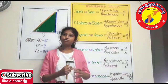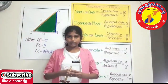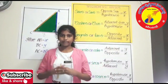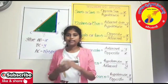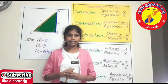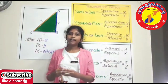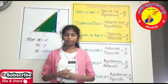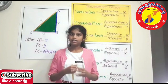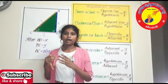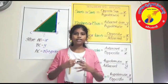Some more basic points of trigonometric ratios: sine theta equals 1 by cosec theta, cosec theta equals 1 by sin theta, cos theta equals 1 by sec theta, and sec theta equals 1 by cos theta. Tan theta equals 1 by cot theta, and cot theta equals 1 by tan theta. We can also write tan theta as sin theta by cos theta, and cot theta as cos theta by sin theta. These are the basic points of trigonometric ratios.